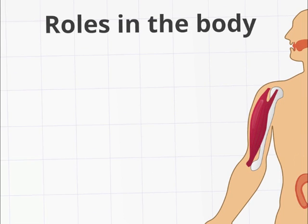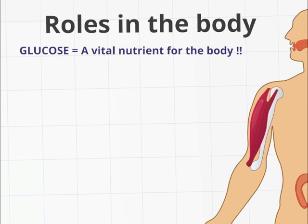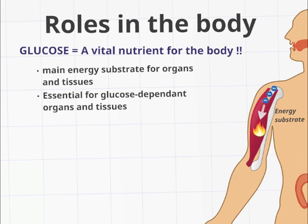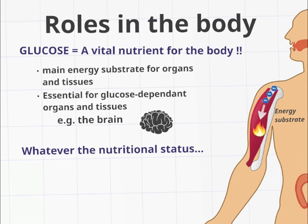Role in the body: Glucose is a vital nutrient for the body, because the majority of cells and organs use glucose as an energy substrate for their function. In fact, certain organs and tissues can almost only use glucose to function — these are known as glucose-dependent organs and tissues, an example being the brain. Therefore, whatever the nutritional situation, our body has mechanisms for maintaining a constant glycemia, the concentration of glucose in the blood.